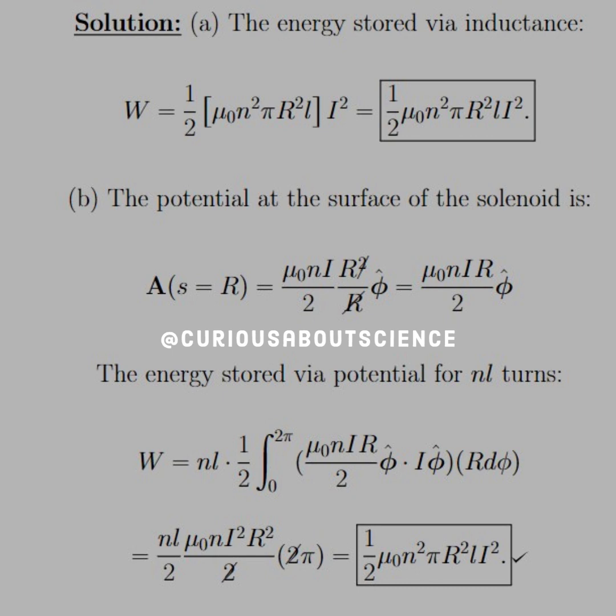Alright, now the energy stored via the potential for NL turns is NL, for the total number of turns, times the energy per turn is one half zero to two pi, because again we're going through the line integral of one singular turn, which is two pi radians. And then I is going in the phi hat direction as well, so you see the dot product works out nice. And you see, lo and behold, we get the same result as we did in A.